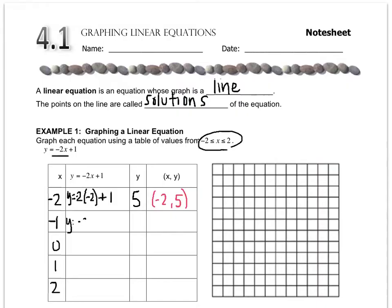y equals negative 2 times negative 1 plus 1. Negative 2 times negative 1 is 2. 2 plus 1 is 3. So that means that I'm going to end up including the point negative 1, 3. I'll do one more with you. y equals negative 2 times 0 plus 1. That is going to end up being 1. And so that means that I'll end up graphing the point 0, 1. Can you please pause the video and finish the table?